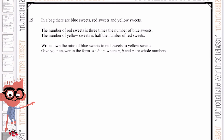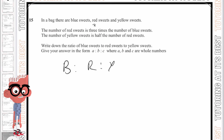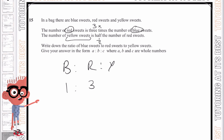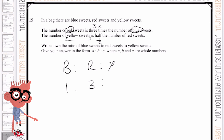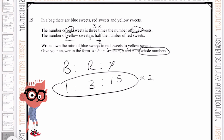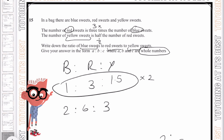And here are the last two questions for today. In a bag there are blue sweets, red sweets and yellow sweets. The number of red sweets is 3 times the number of blue sweets, so if blue is 1, red is 3. The number of yellow sweets is half the number of red sweets, so if red is 3, yellow is 1.5. Writing blue to red to yellow gives us 1 to 3 to 1.5. But the question asks for whole numbers, so we multiply everything by 2, giving us 2 to 6 to 3.